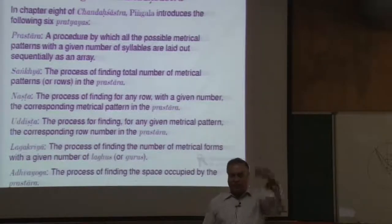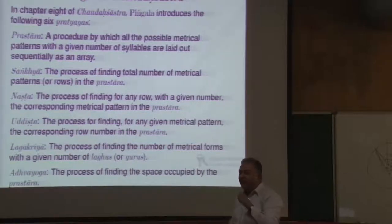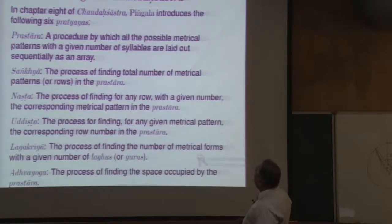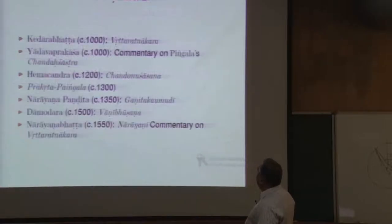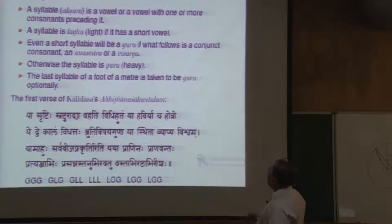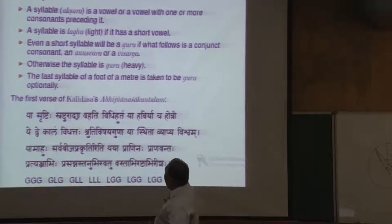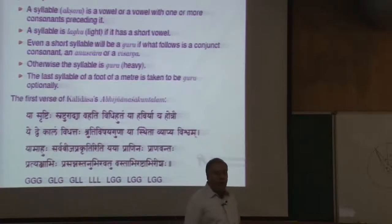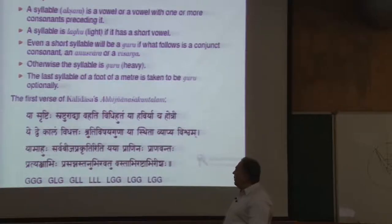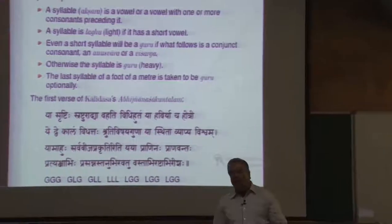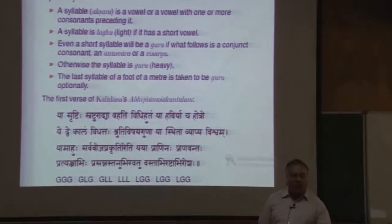How does combinatorics arise in Chandas Shastra? Before going to music, let us very briefly see how combinatorics arises in meter. Pingala in his Chandas Shastra discussed these Pratyayas. In Chandas Shastra there are two kinds of syllables: the light syllable called laghu and the heavy syllable called guru. A syllable in India is always a vowel, or a collection of consonants with a vowel — that constitutes a syllable or akshara or varna.